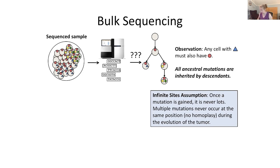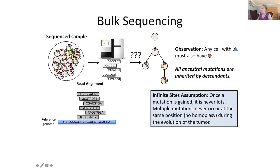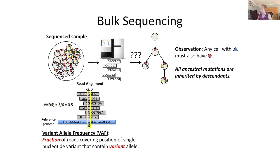If we take the sequencing reads and align them to our reference genome — a typical approach — we can start to identify potential mutations. We use a piece of data called variant allele frequency, where we look at the set of reads aligned to a particular position. If those reads indicate a mutation — meaning we see two different alleles at that position — we look at the variant allele frequency, which is the fraction of reads that have the alternate or mutated allele.